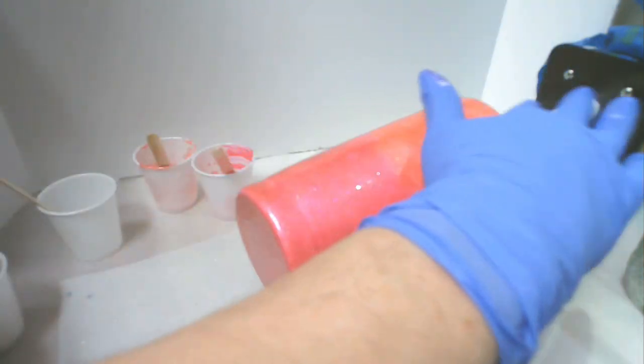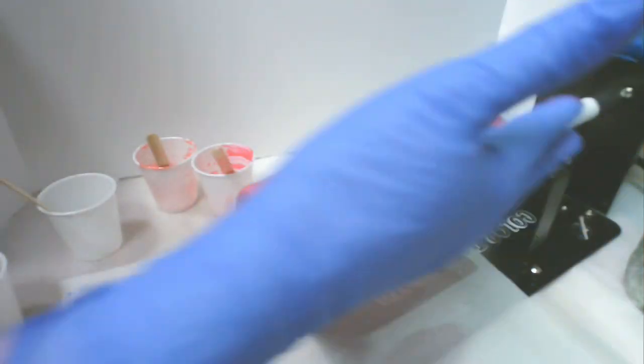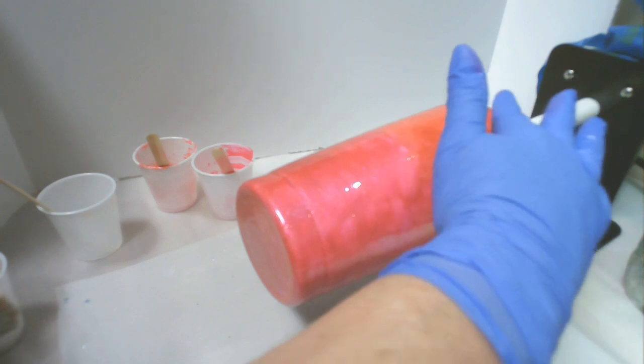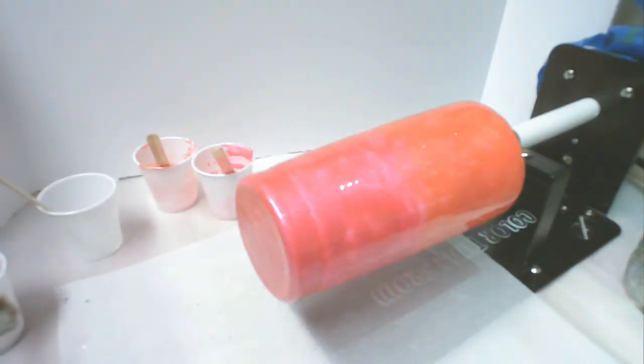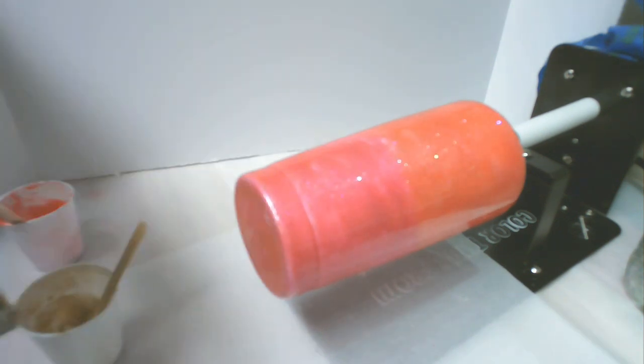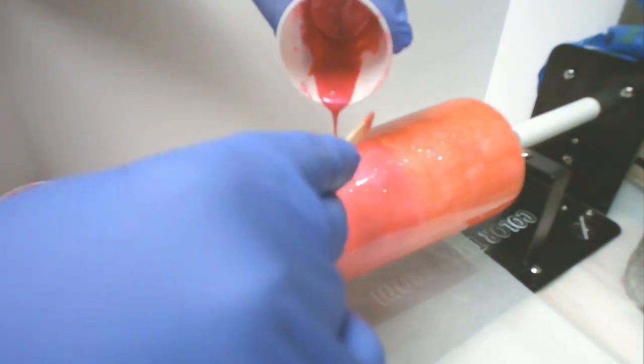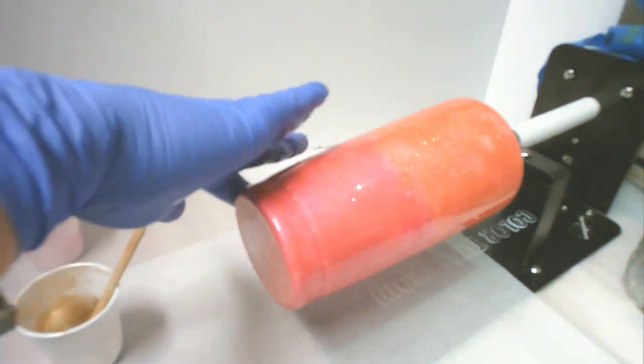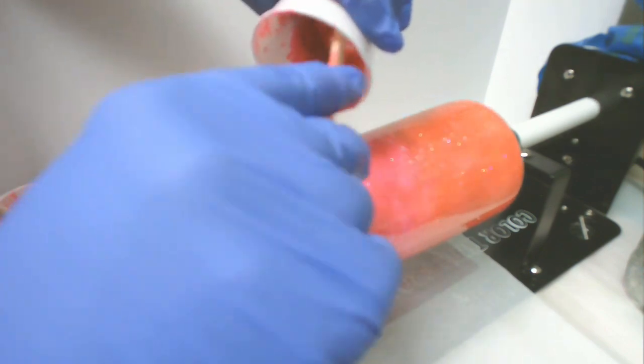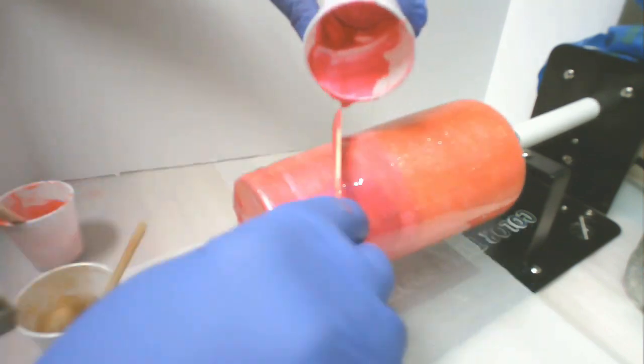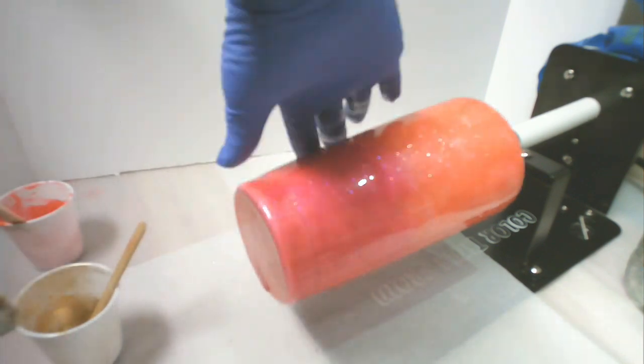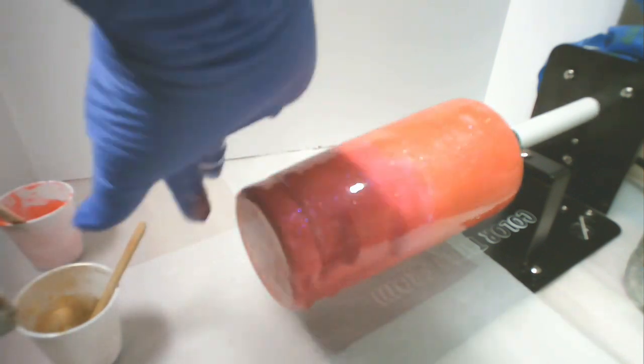And when I'm doing the top, I want to make sure that I go all the way up and over the edge of the rim. Once it's cured, you can just take your X-Acto knife, run it around the edge, and it takes away any resin that you don't need and then gives you a really good seal all around the edge of the cup.